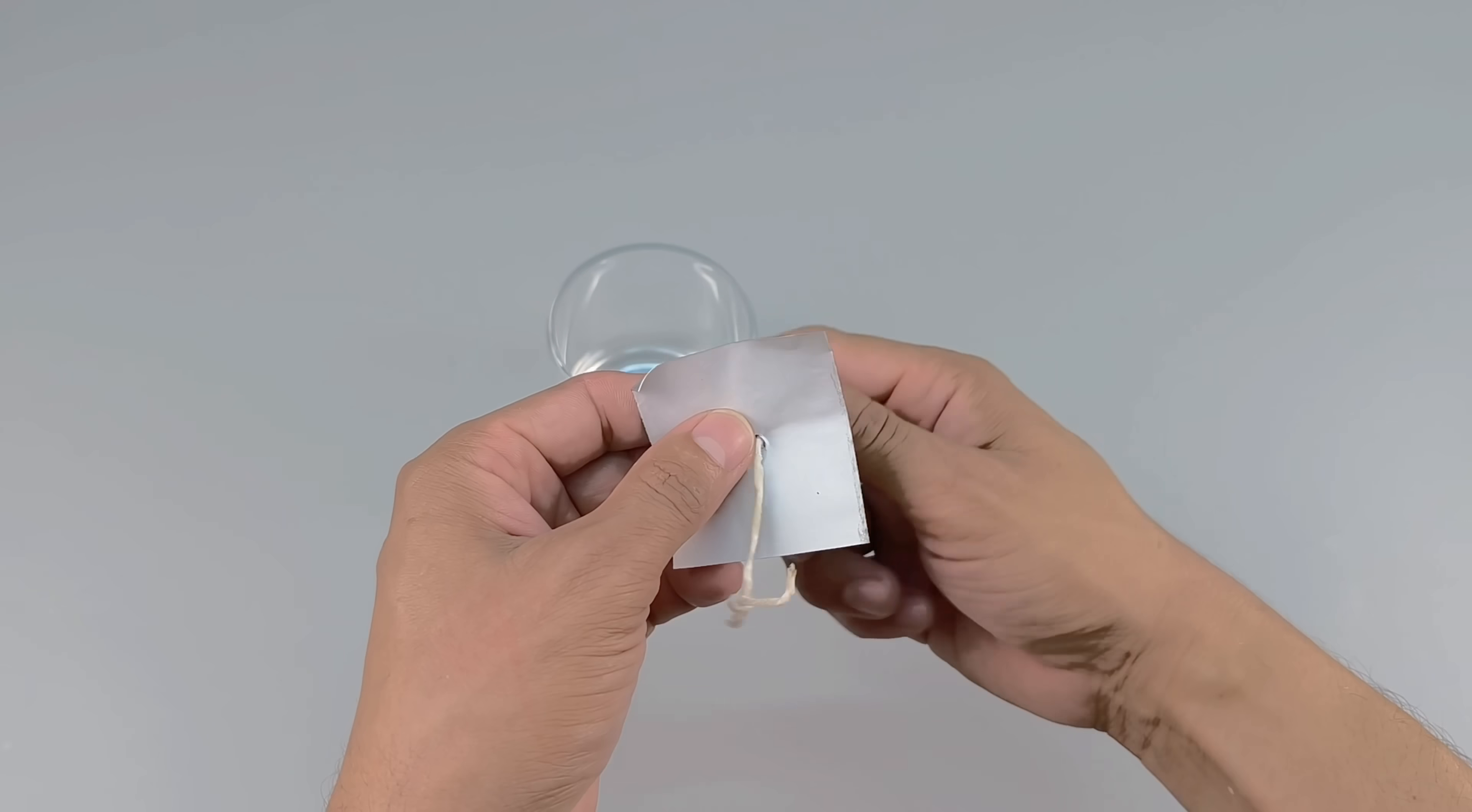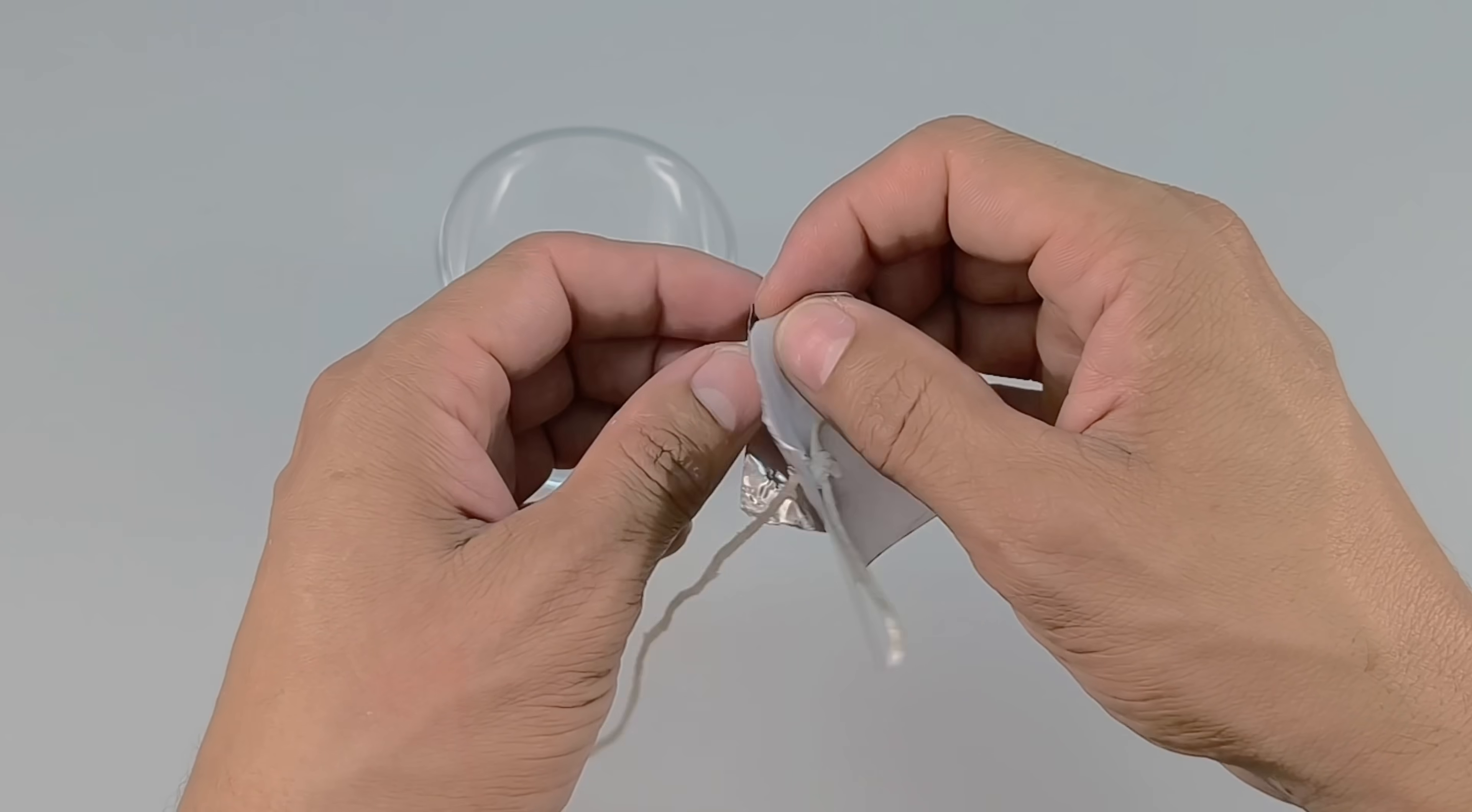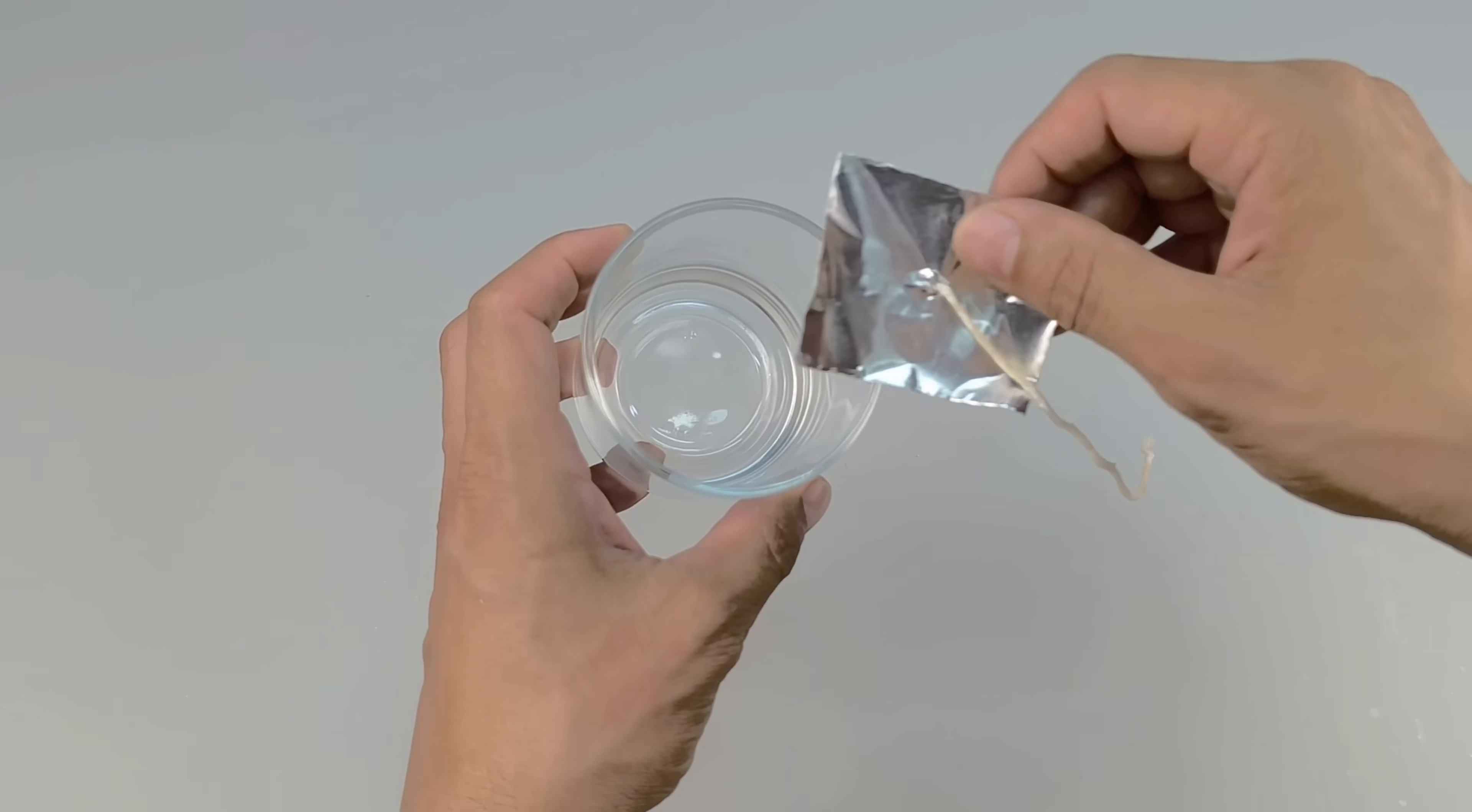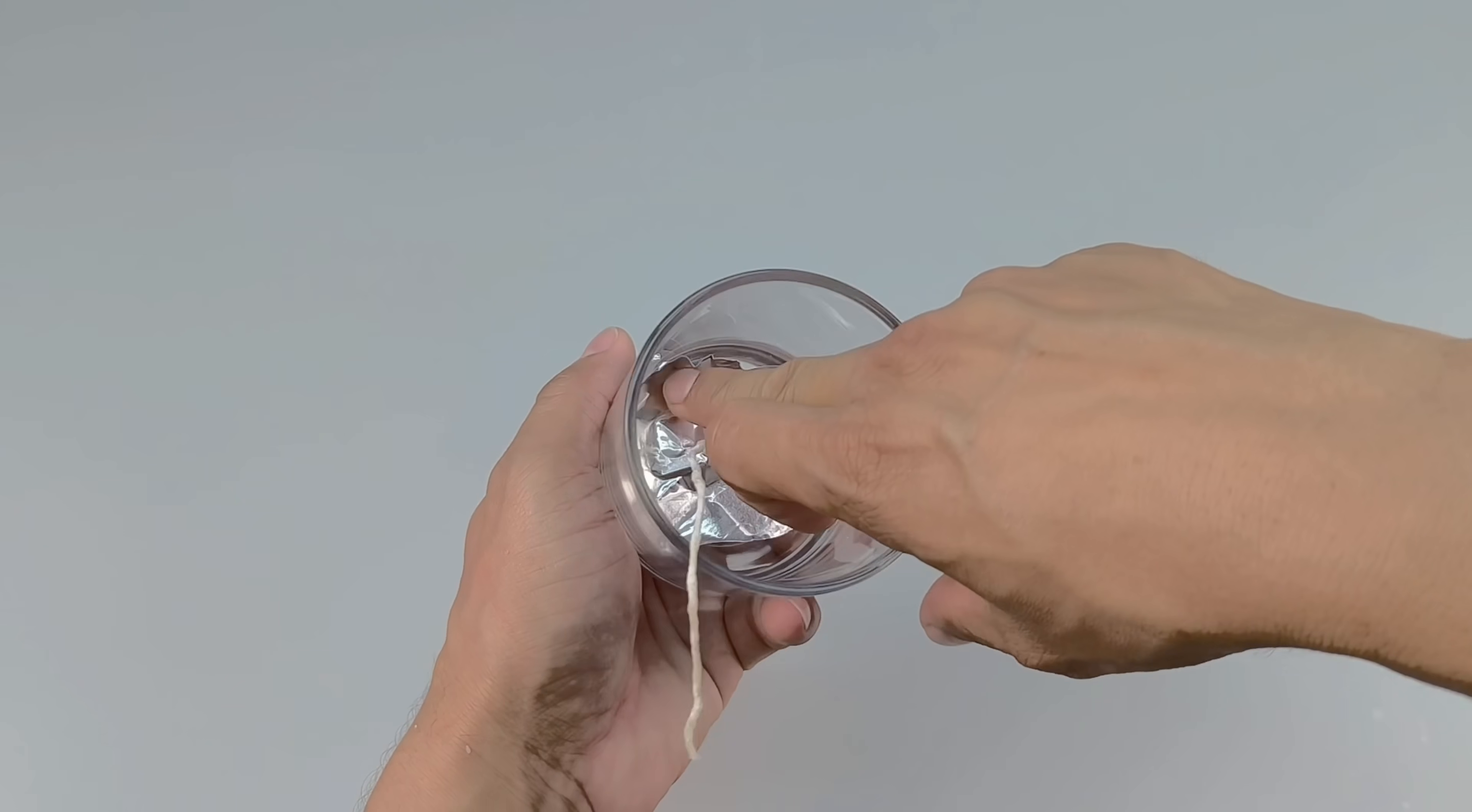But don't worry if you don't have this tape at home. You can improvise with whatever you have on hand. Hot glue, which dries quickly and holds well. Metal paper clips, which can be opened and bent to hold the wick. Or even toothpicks or wooden skewers, stuck through the rim of the cup to keep the wick straight in the center until the wax hardens.